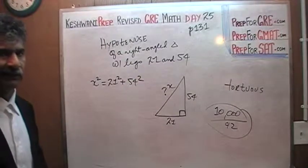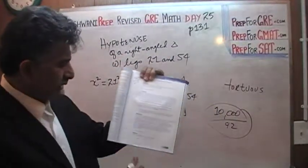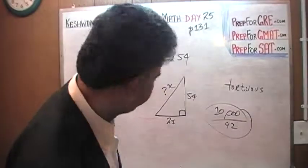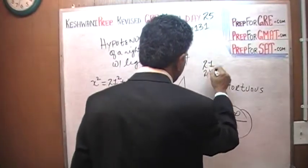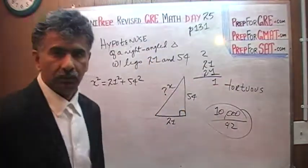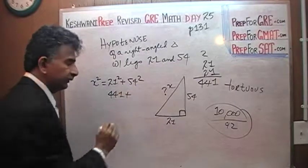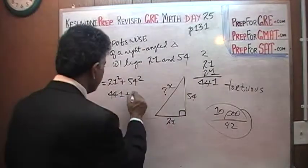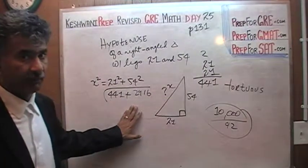Listen carefully: don't try to do everything at once in the calculator the way they explain it. Just figure out what 21 squared is — it's not that complicated. 21 times 21: 21 times 1 is 21, 21 times 2 is 42, plus carry 2 is 44, so that's 441. Then pick up the calculator for 54 squared — that comes out to 2916. Add them up one step at a time: don't try to do everything together.